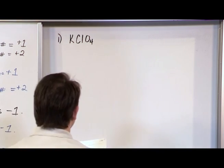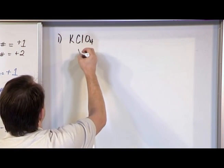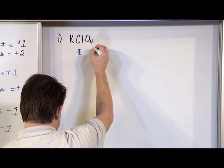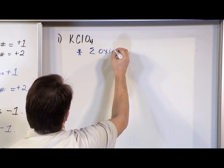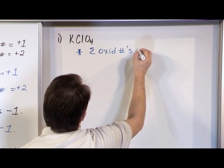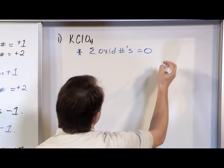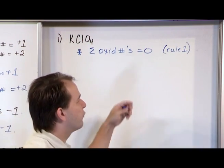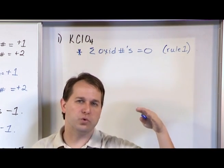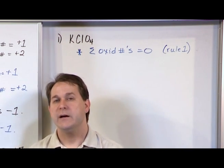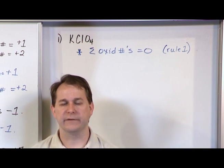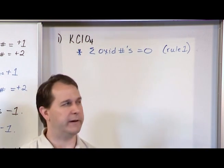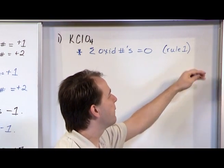So the way that I want to put this down is I want to put an asterisk here, just to remind myself. What I'm going to say is that the sum of the oxidation numbers is going to be equal to zero. And in parentheses, I'm going to put rule one. This is not something you have to do, but what I'm going to do is write down what I'm doing, and I'm going to put the rule that I'm using so that if you're on a test and the teacher sees that you know what rules you're using, then you can get some partial credit if you don't get the final answer correct.